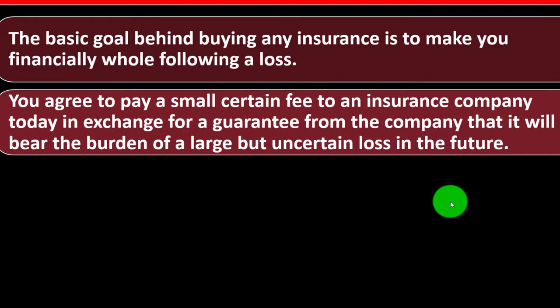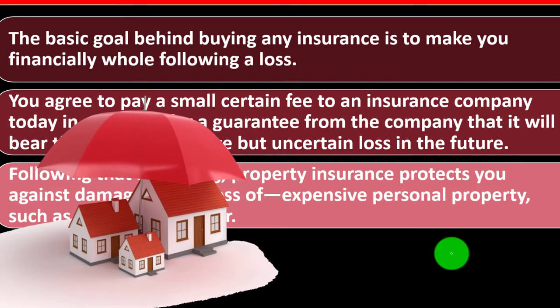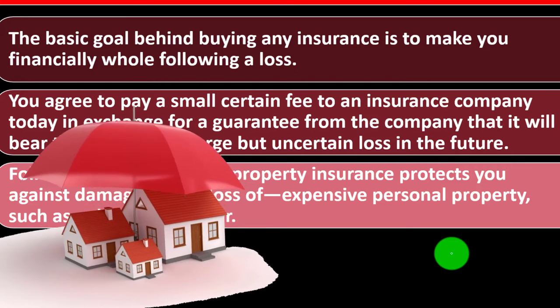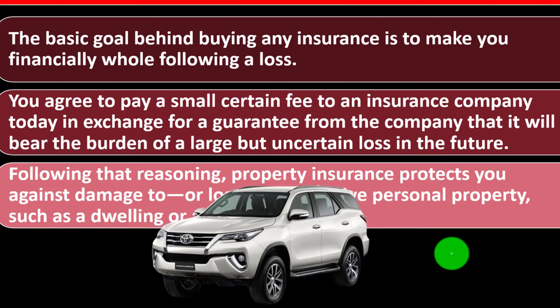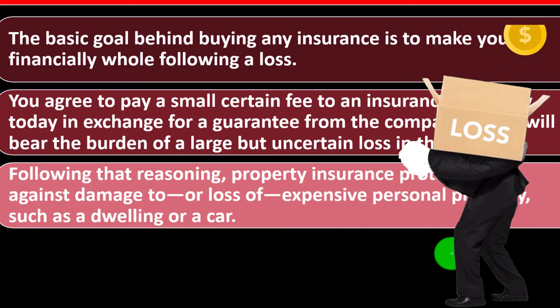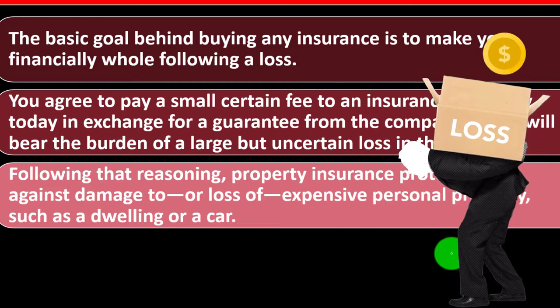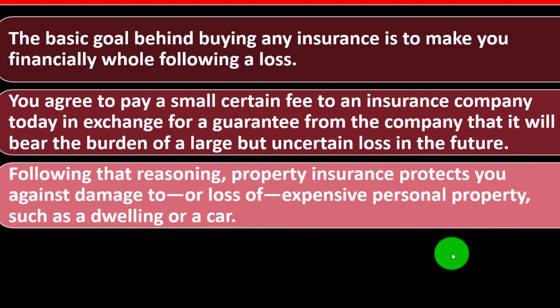The risk mitigation strategy might be one that we'd want to pursue. Following that reasoning, property insurance protects you against damage to or loss of expensive personal property, such as a dwelling or a car. When we're talking about property insurance, we're talking about insurance on property significant in value — like a home or car — where suffering that type of loss would be difficult to recoup. We can only recoup the financial loss; we can't insure against the loss of memories in that home.